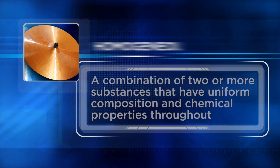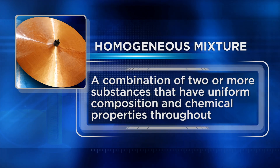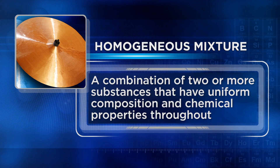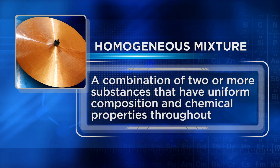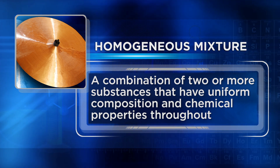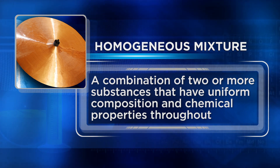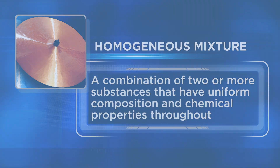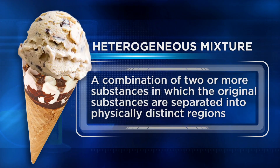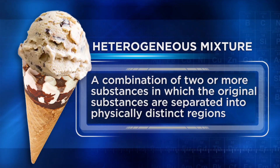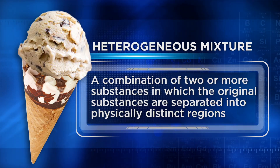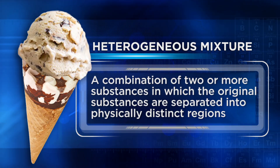All mixtures can be classified as either homogeneous or heterogeneous. A homogeneous mixture is a combination of two or more substances that have uniform composition and chemical properties throughout. A heterogeneous mixture is a combination of two or more substances in which the original substances are separated into physically distinct regions with different properties.